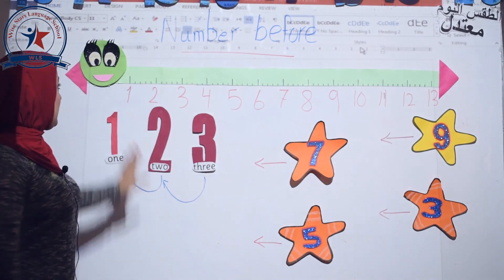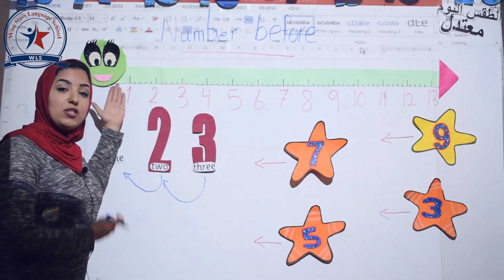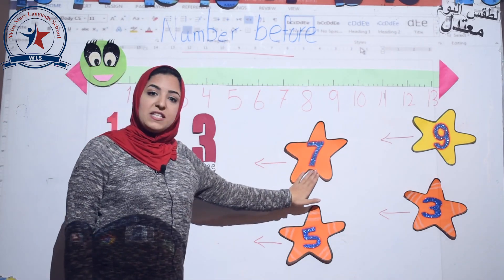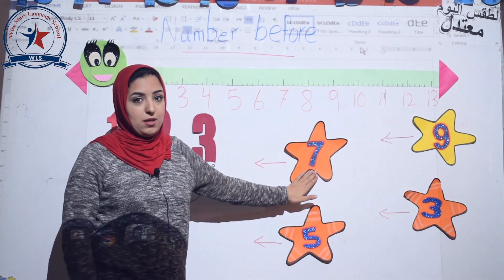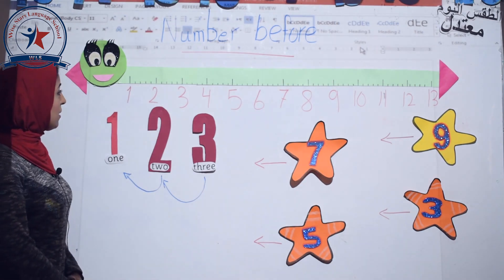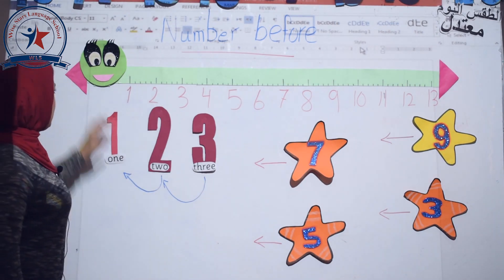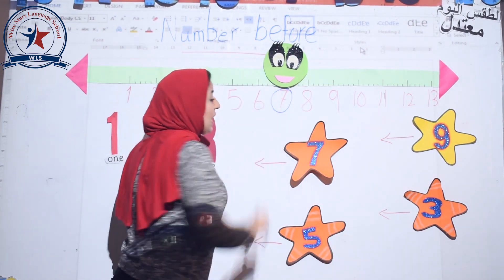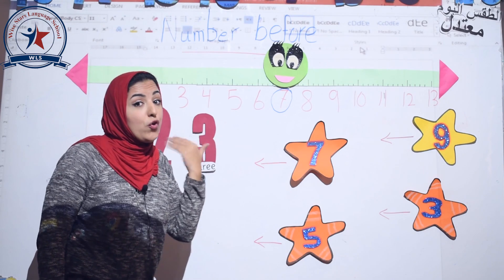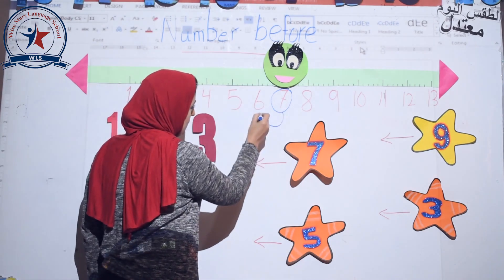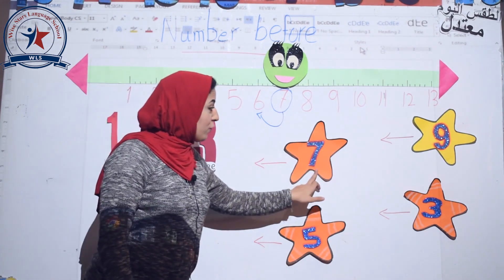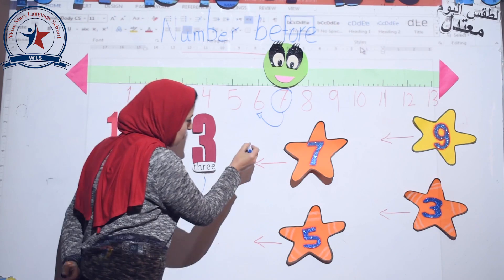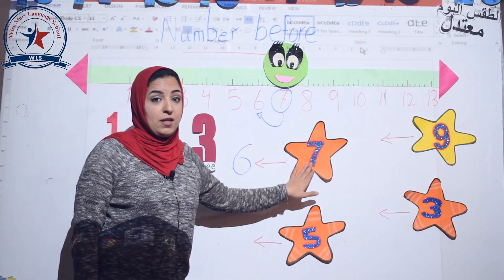And now let's say hello to Mr. Number Line. This is Mr. Number Line — it has lots of numbers. Let's play with him. What is this number, KG? This is number seven. Let's ask Mr. Number Line. This is number seven, and what is the number that comes before number seven? Number six. So before seven, six. Who can help me write number six? Let's write it together. Before seven, six.